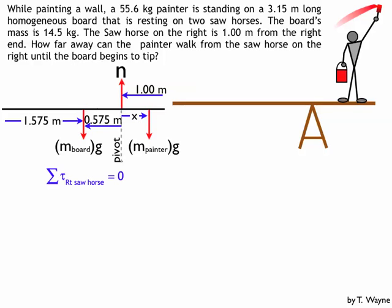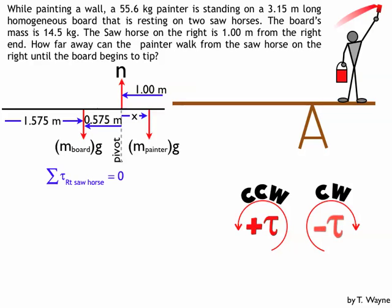Now when I'm doing torques, remember the torques come in two varieties. Any force that causes a body to rotate in a counterclockwise direction is a positive torque. Any force that causes a body to rotate around your chosen pivot point in a clockwise direction is a negative torque. So when I look at these, I've got to figure out which are negative and positive torques or rotations.